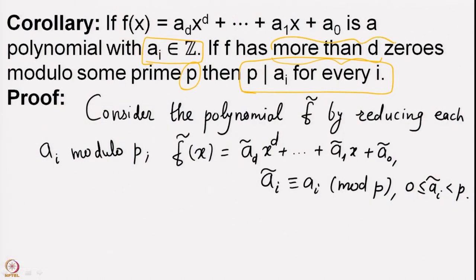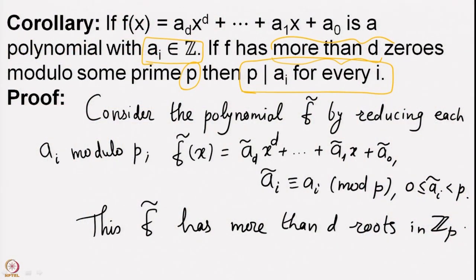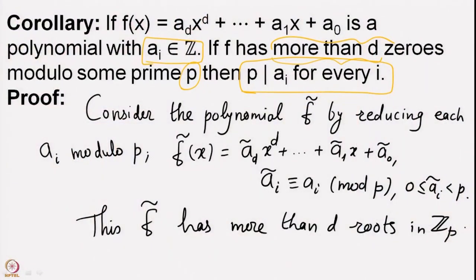Consider the polynomial f̃ obtained by reducing each a_i mod p. We have f̃(x) = ã_d·x^d + ... + ã_1·x + ã_0, where ã_i ≡ a_i (mod p) with ã_i between 0 and p. We now have a polynomial over Z/pZ, and by our assumption it has more than d roots. But Lagrange's theorem says a polynomial of degree d can have at most d roots, so something is wrong — the hypothesis of Lagrange's theorem must not be satisfied.